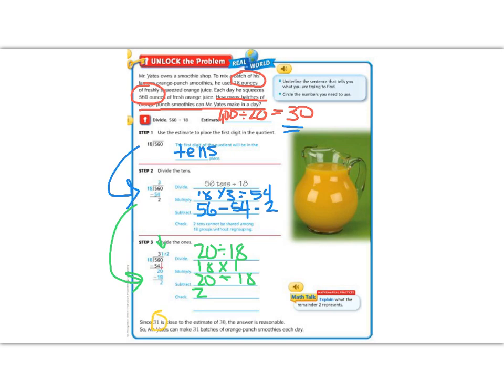31 was close to our estimate of 30, so we know that our answer is reasonable. Mr. Yates can make 31 smoothies each day.